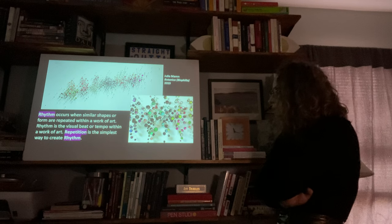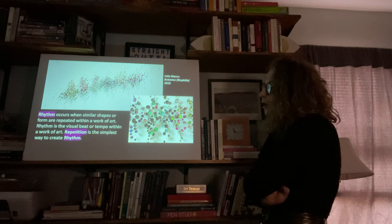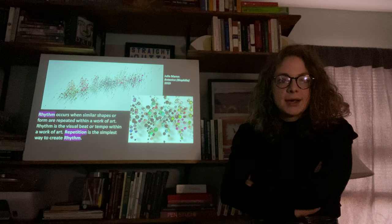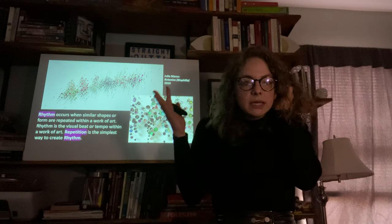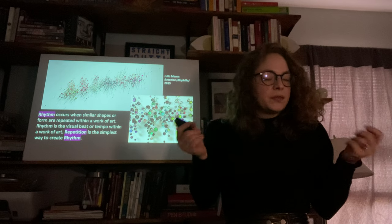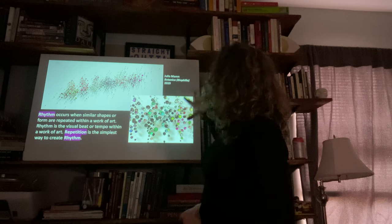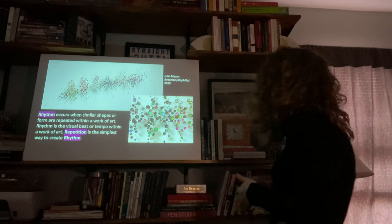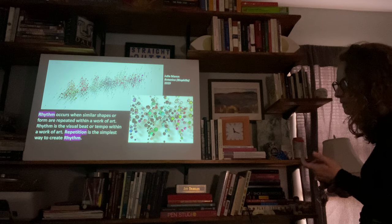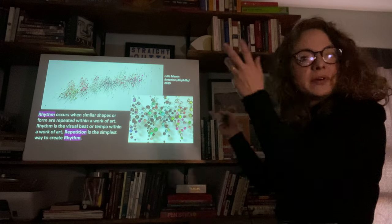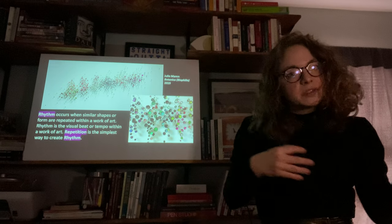Rhythm occurs when shapes or forms are repeated within a work of art. Rhythm is a visual beat or tempo, and repetition is the simplest way to create rhythm. Here, the rhythm occurs — it reminds me of a sound waveform in a voice memo, because it's bigger and littler with different colors. This is by Julie Marin, called 'Botanica,' and these are acorn caps filled with color and arranged so that through the repetition of shapes in different orders but close together, it creates rhythm.